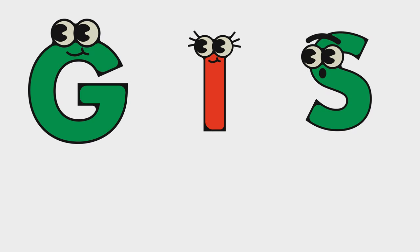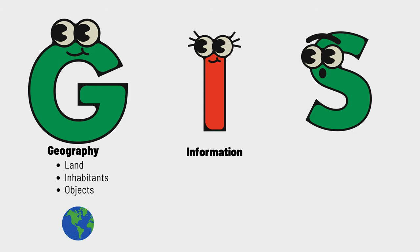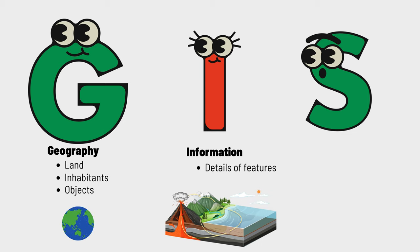In GIS, G stands for Geography, which is the study of land, inhabitants, and objects on the surface of the Earth. The I represents Information, focusing on the details of features on the Earth's surface. Think of it as the specifics, like the name of a building.